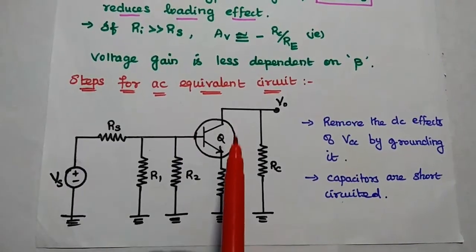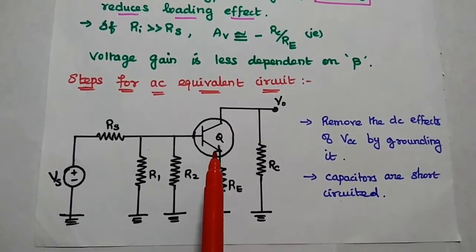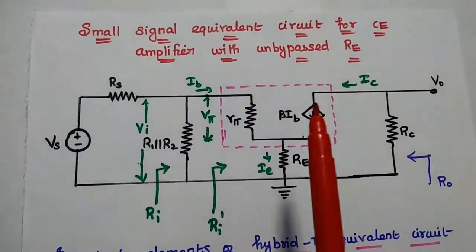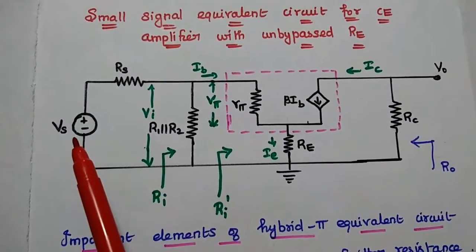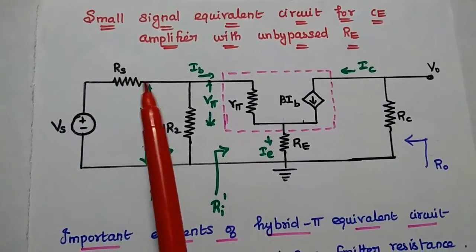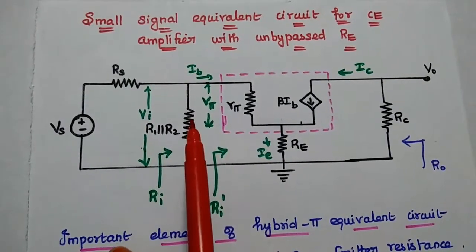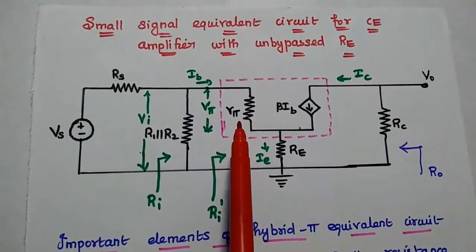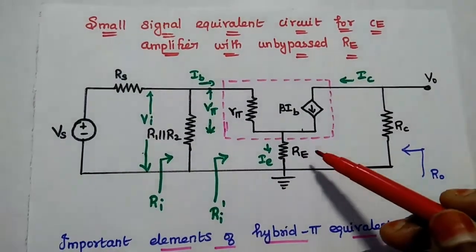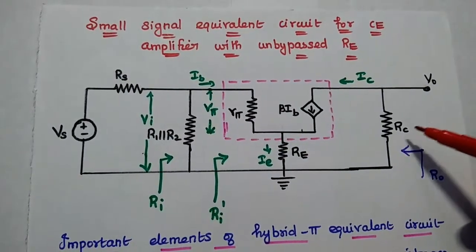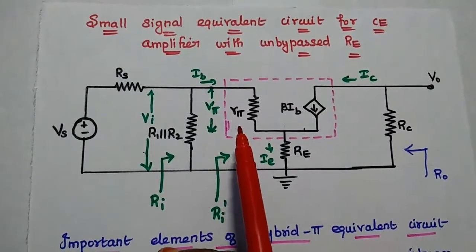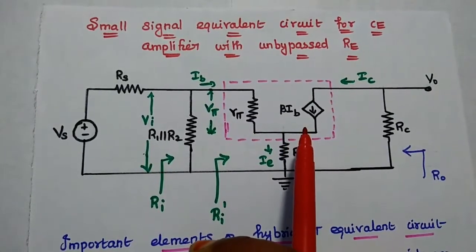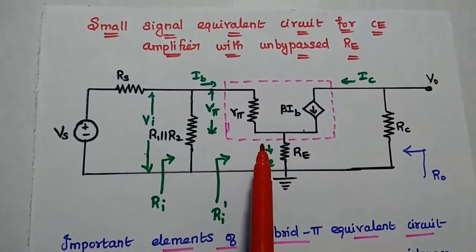In the next step, we are going to replace this transistor with its equivalent hybrid phi circuit. In the small signal equivalent circuit for the common emitter amplifier with unbypassed emitter resistor, Vs is the source voltage in series with the source resistance. R1 and R2 are combined together as a single element R1 in parallel with R2. Then the transistor is replaced with its equivalent phi model with the parameters Rpi, Beta, Ib, and the emitter resistor. The last one is the collector resistor. Rpi represents the small signal internal base-emitter resistance. Beta is the current gain, Ib is the base current, and the equivalent circuit is used with its current source.